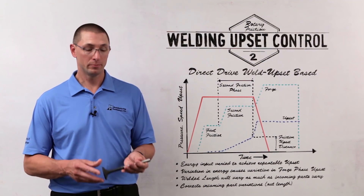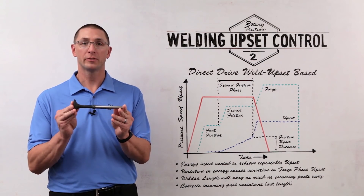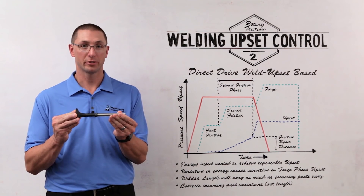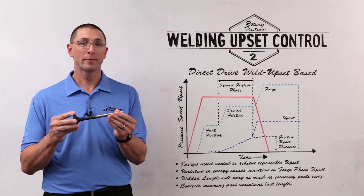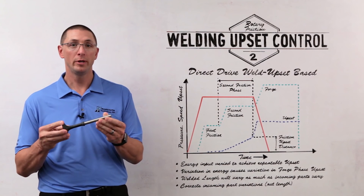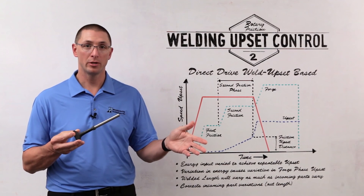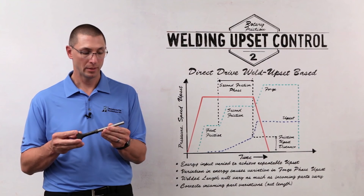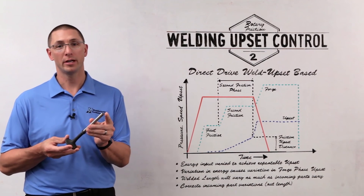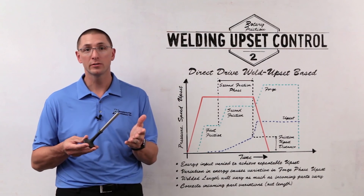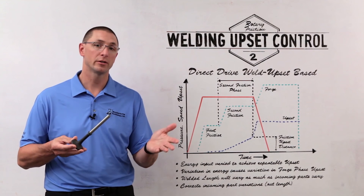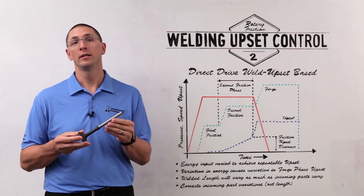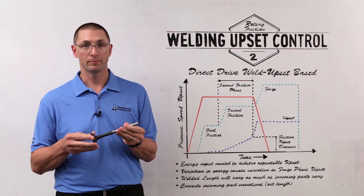In the last episode we talked about how upset is the amount of shortening of a part resulting from friction welding, and that if we had perfect incoming parts we could fix the amount of energy that we use to make that weld and get very repeatable upset. However, incoming part variations such as area differences, surface conditions, material differences, or even interface squareness can cause subtle variations in upset.